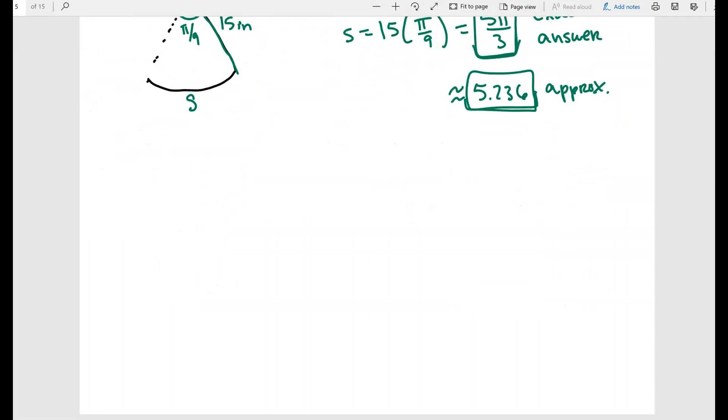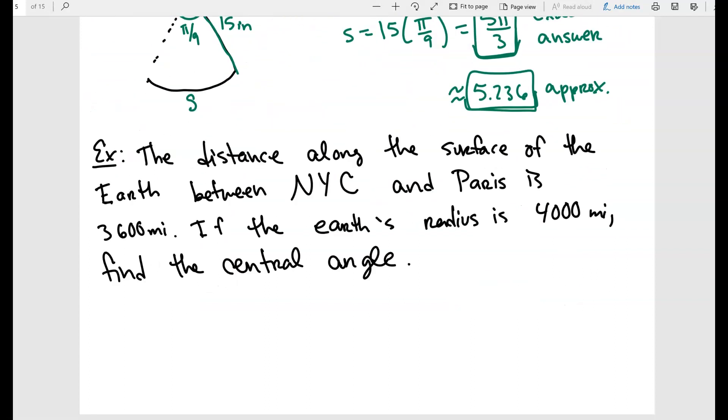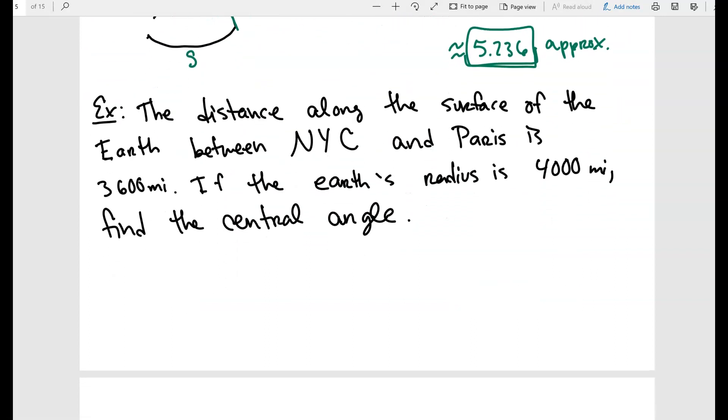All right, so now let's do another problem. The distance along the surface of the earth between New York City and Paris is 3,600 miles. So if the earth's radius is 4,000 miles, find the central angle. So basically what are we really looking for? You can see that we're looking for the central angle. So the central angle in this case is going to be theta.